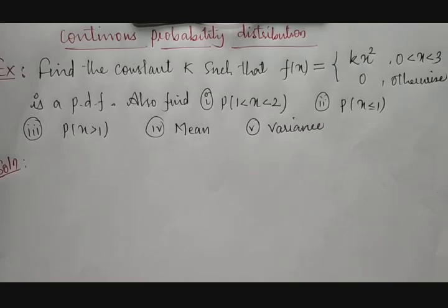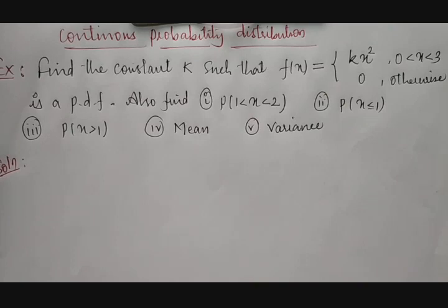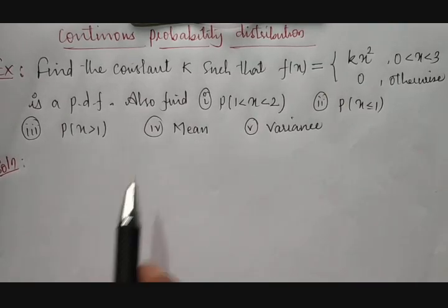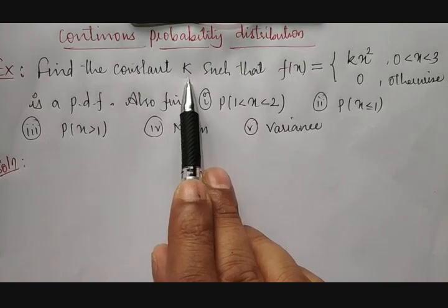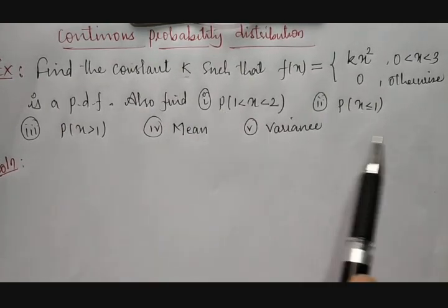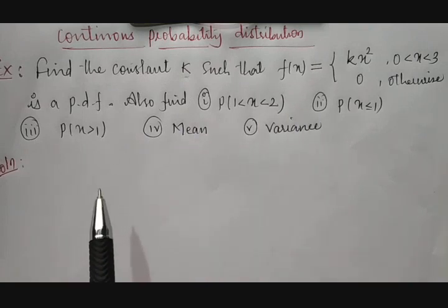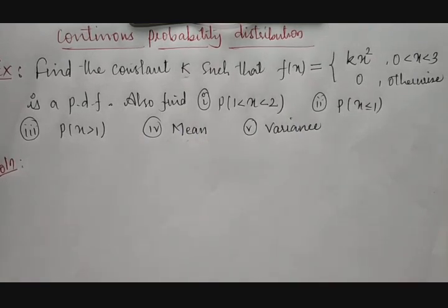Hello friends, this is Professor Kiran Puddar, Angadeen Institute of Technology and Management. Now we will discuss an example on continuous probability distribution. The example is about finding the unknown constant k, then finding certain probabilities with respect to x, and also calculating the mean and variance.